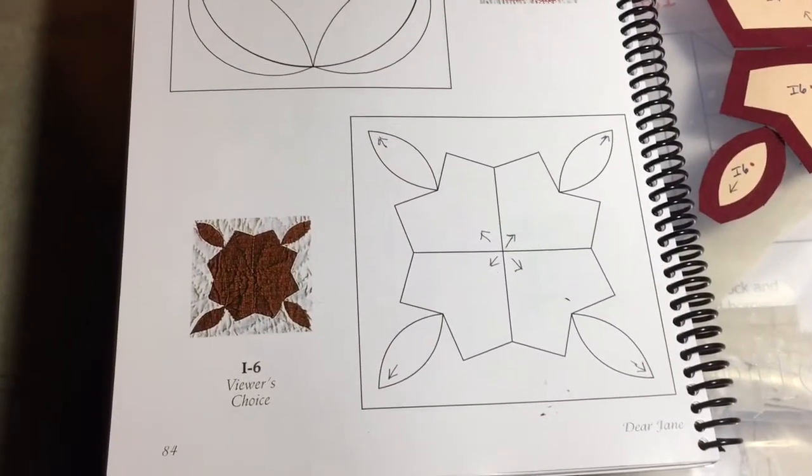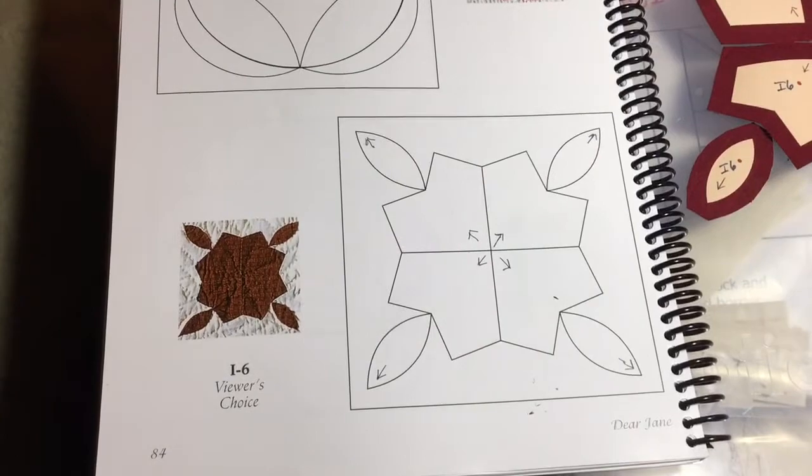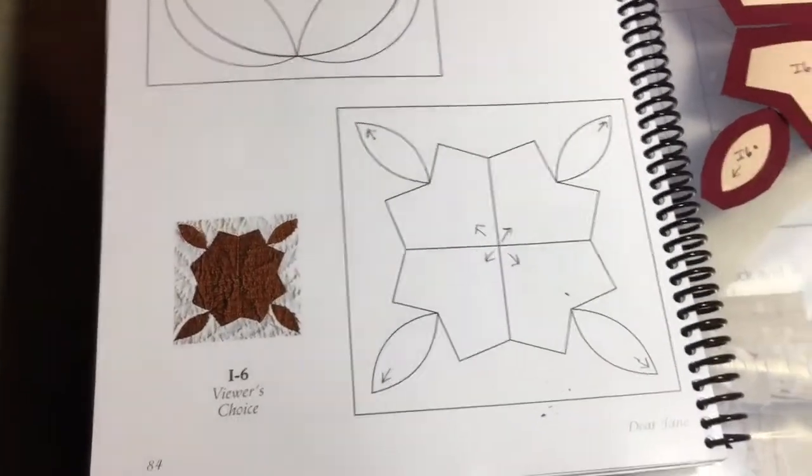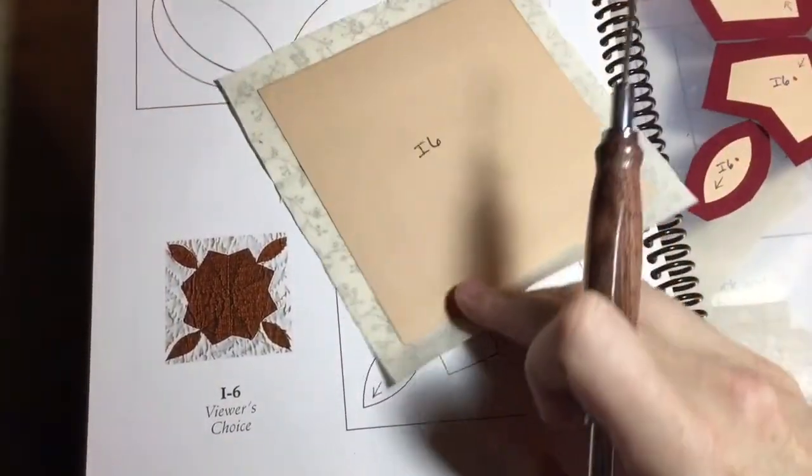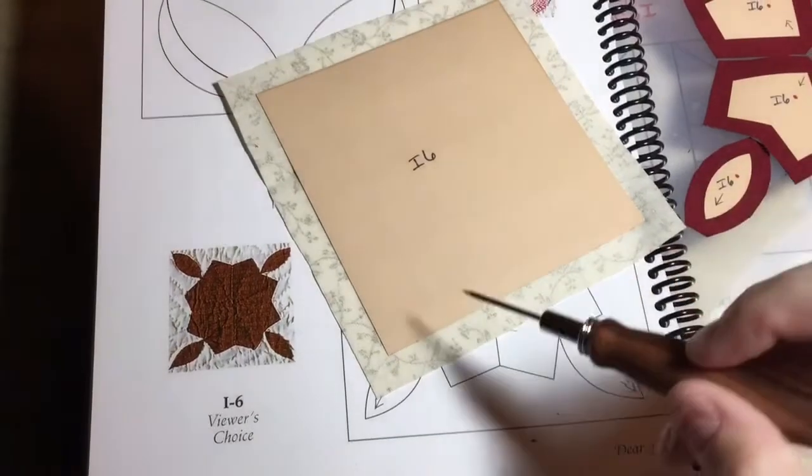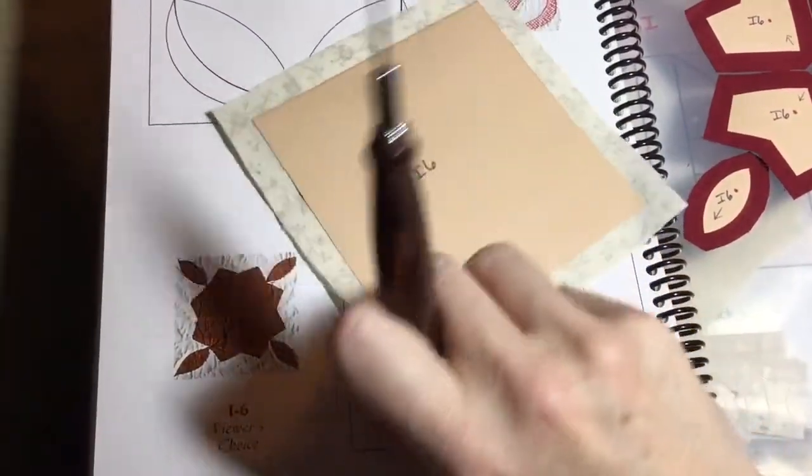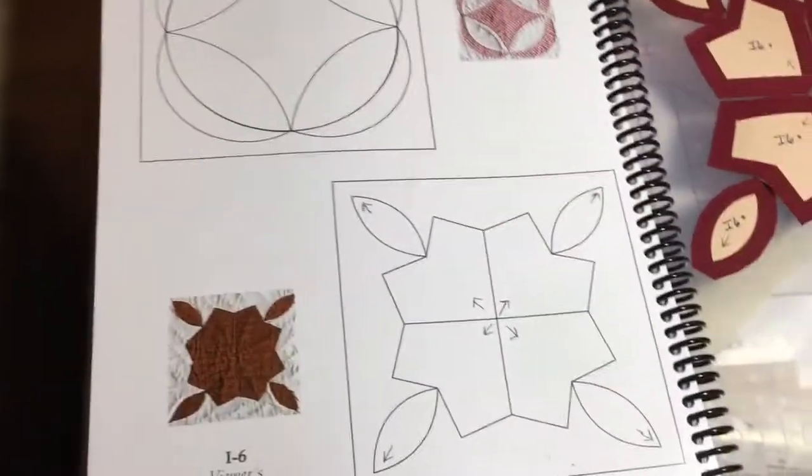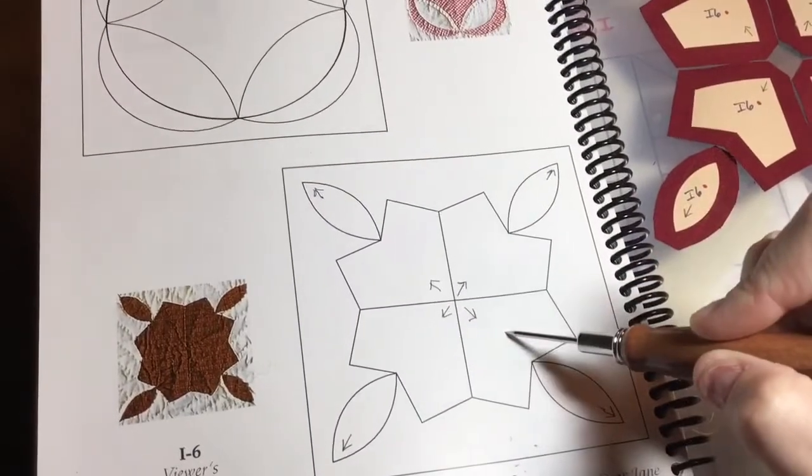Now it's time to start the I6 block. This is an applique block, so I have one big piece for my I6 block background that I just baste the edges around, and then I have all of these individual pieces for applique.